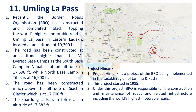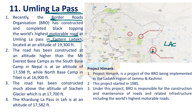Next issue is Umling La Pass. Umling La Pass is located very near to the LAC (Line of Actual Control). Recently, the BRO (Border Roads Organization) has completed the world's highest motorable road at Umling La Pass in the Ladakh region. Earlier, Khardung La, near Leh city, was the highest motorable road. Now, Umling La Pass is the highest motorable road. This is strategically very important.